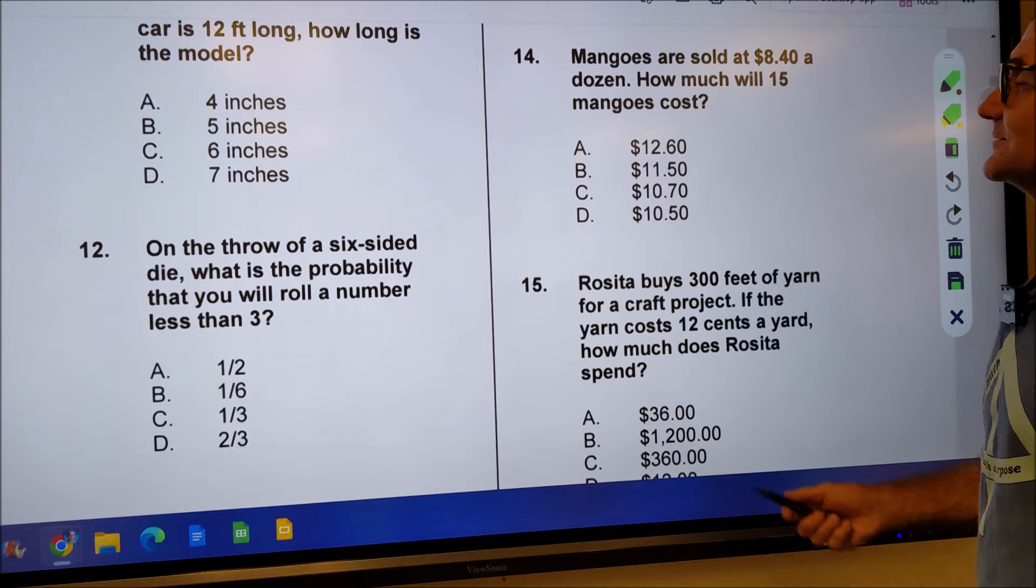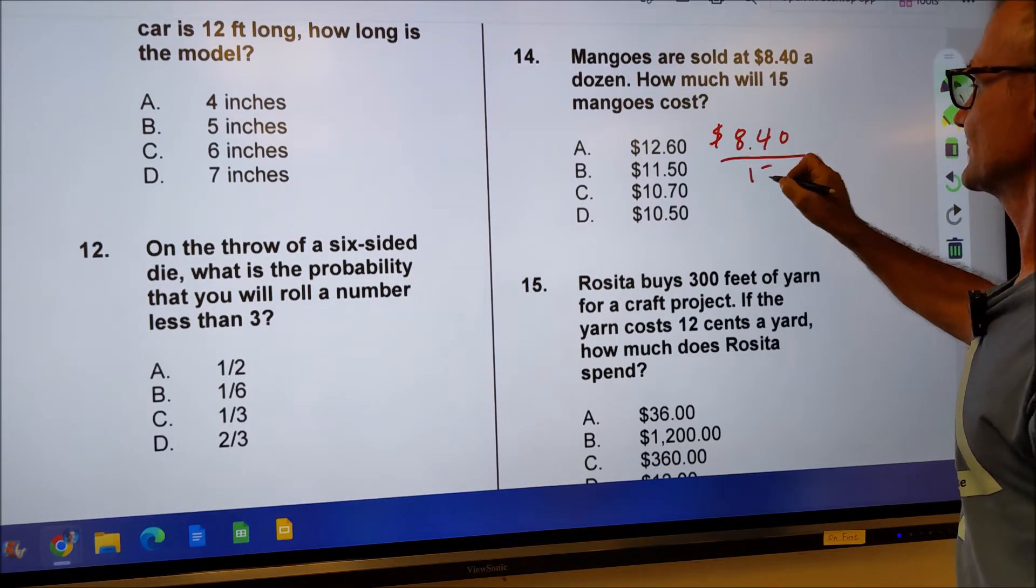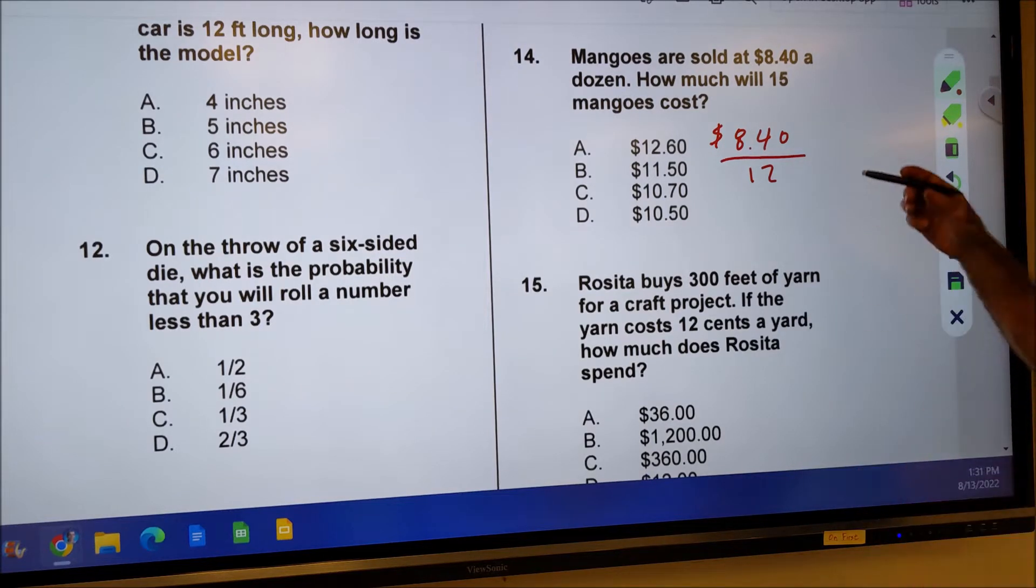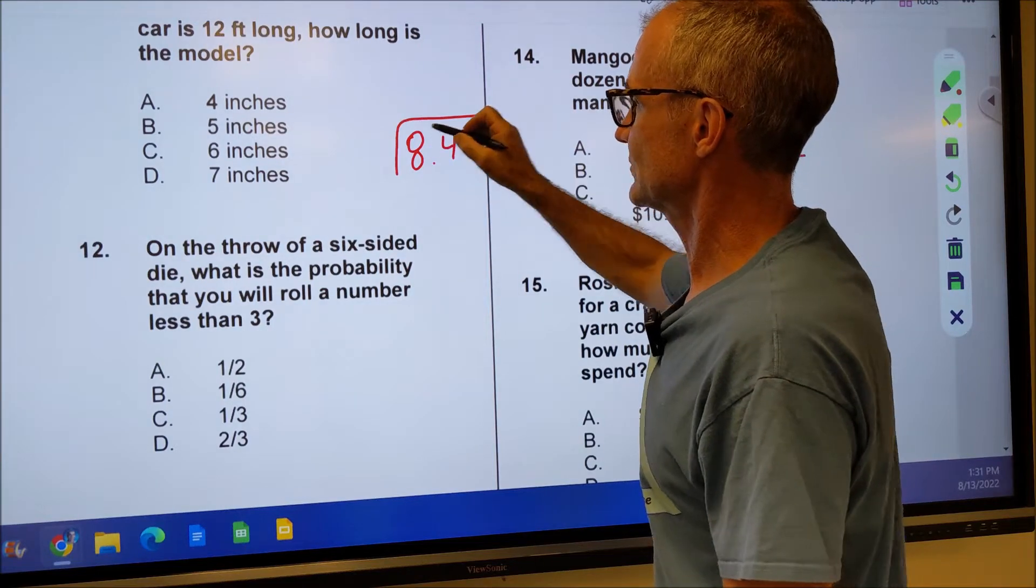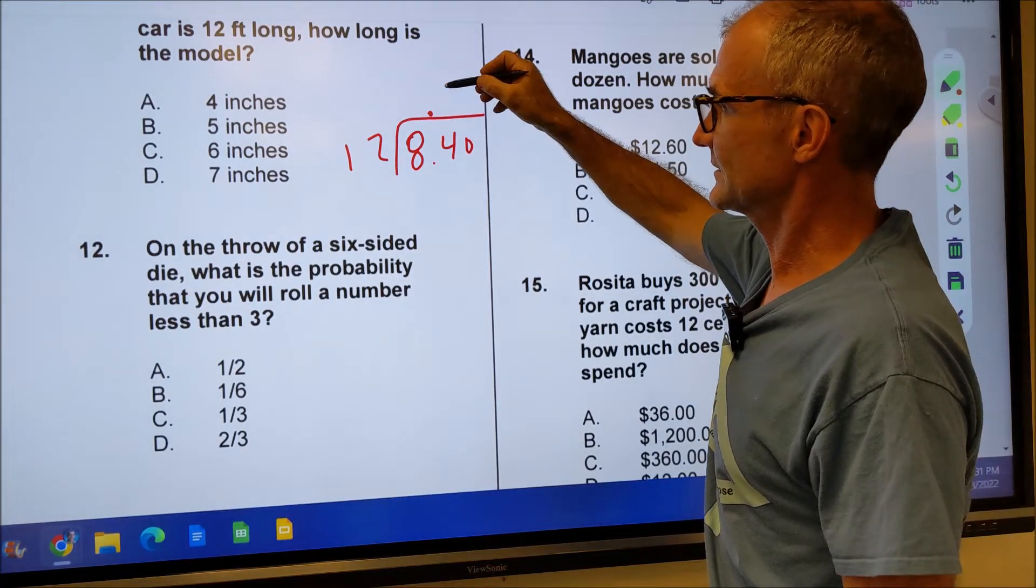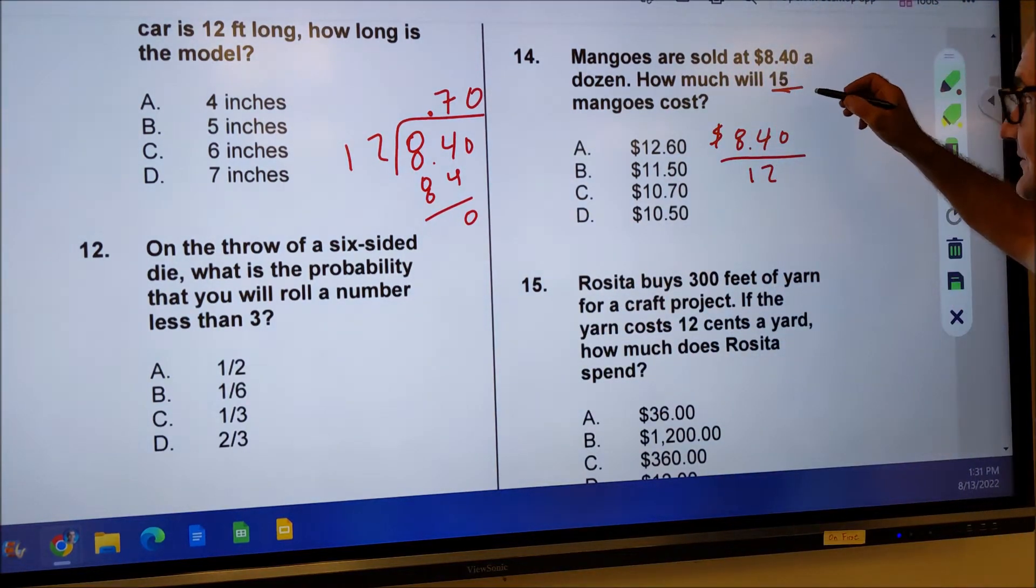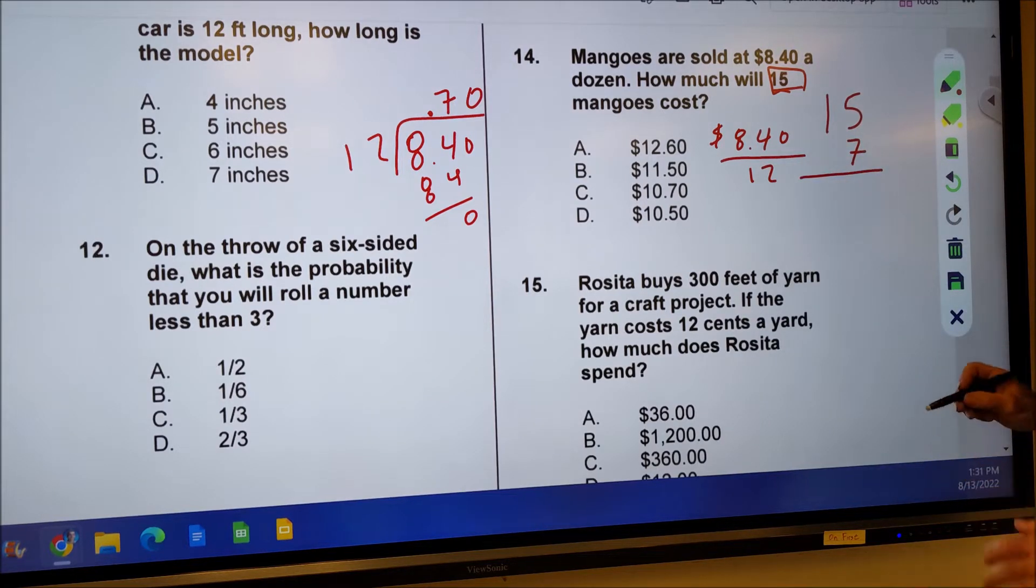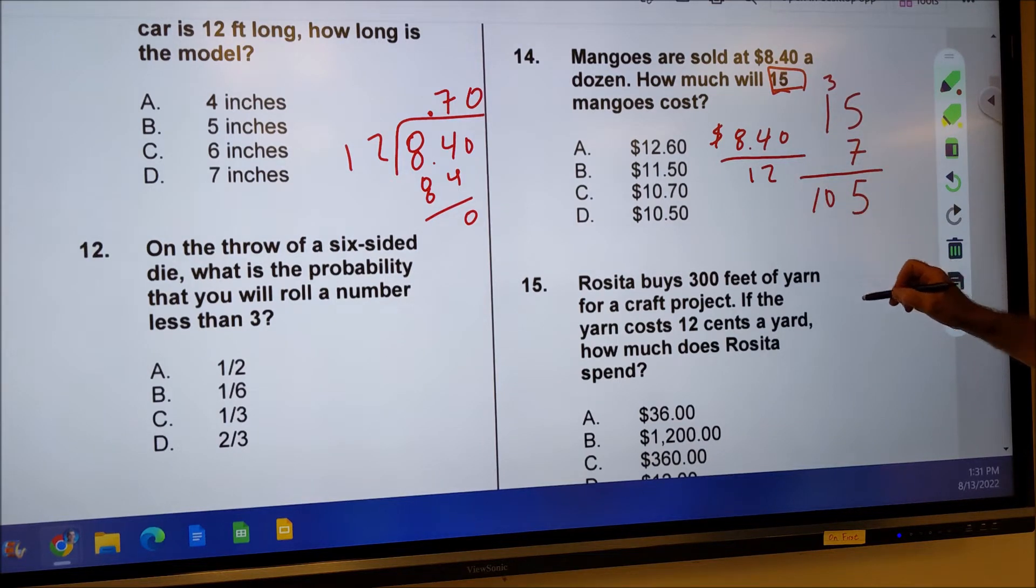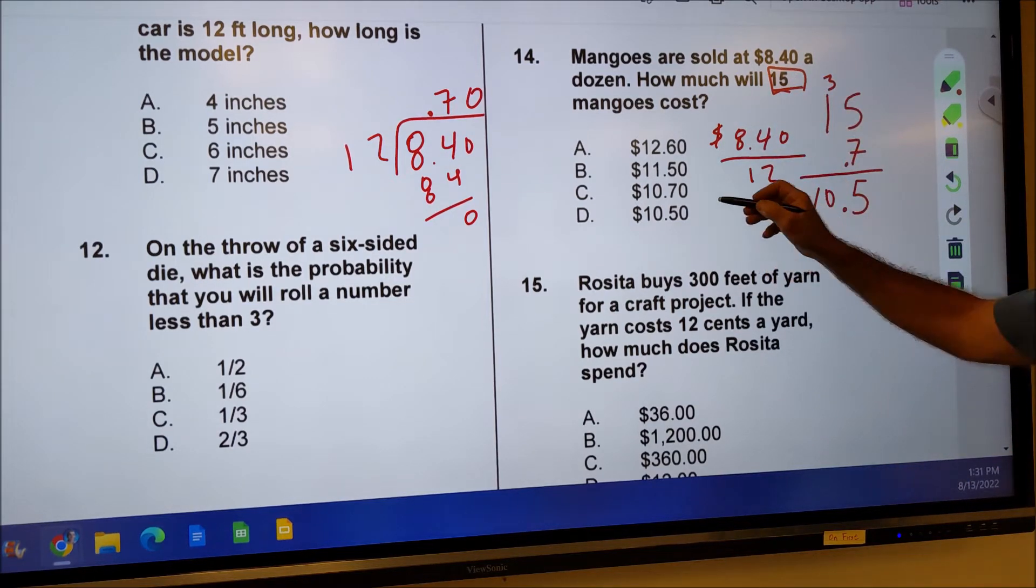Problem number 14 is also a ratio problem. Mangoes are sold at $8.40 a dozen. So I have $8.40 will buy me 12 mangoes. How much will 15 cost? So I want to know how much 15 will cost. So I got to figure out how much they are a piece. So I'm just going to do that division. 840 divided by 12 doesn't go into that eight. Decimal point goes up. It goes in here seven times to give me 84 and then bring down the zero. So it costs me 70 cents a piece. But don't forget that I got 15 of them. So I have to take that 15 times the 70 cents. I'm just going to multiply it by seven. 35 carry the three, 10, 50. And this is 70 cents. So my decimal place is over there. So it's going to be $10.50 for 15 of them. 12 costs $8.40, so 15 costs $10.50. There's my answer right there.